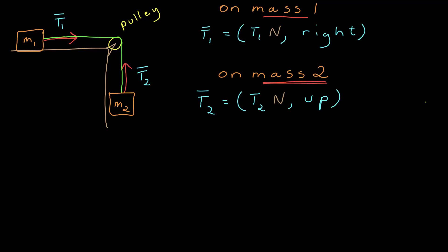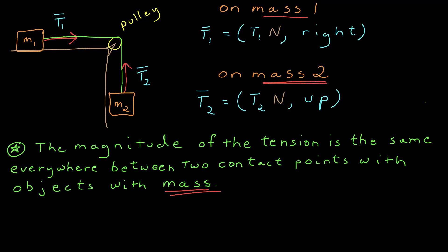So in this case, the pulley is changing the direction that the string goes. The magnitude of the tension is the same everywhere in a string, between two contact points with objects with mass. So as long as the string connects two objects with mass, and there's no other contact with a massive object between them, then the tension everywhere is the same.